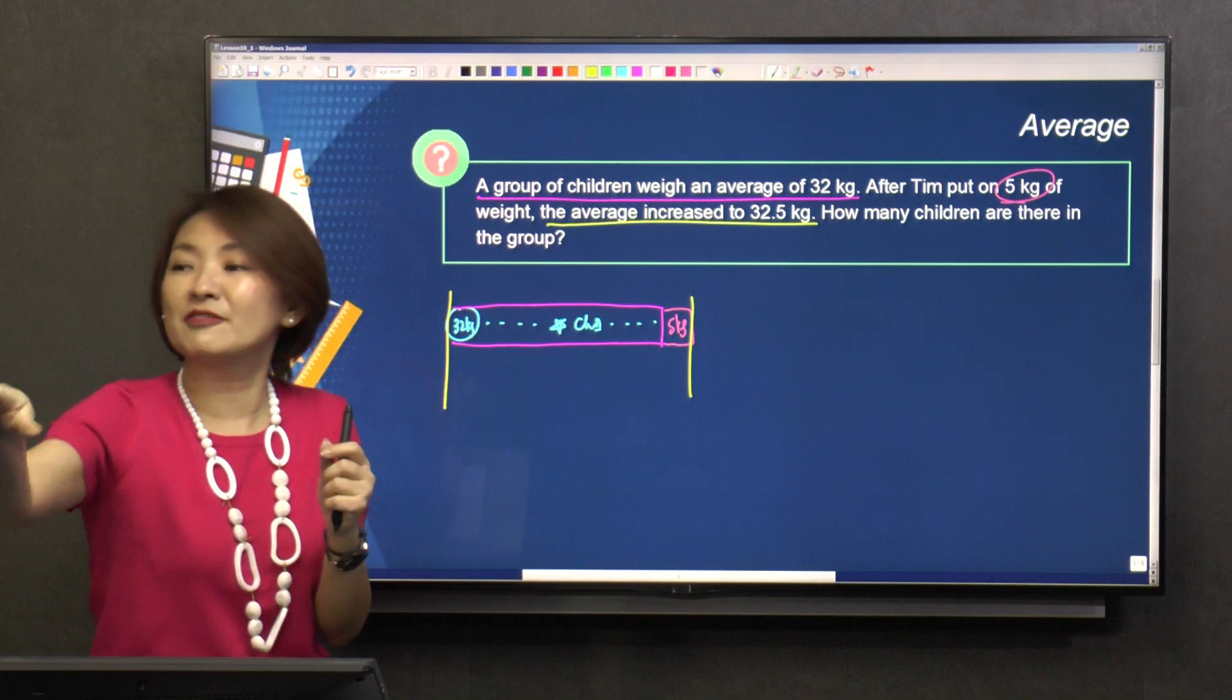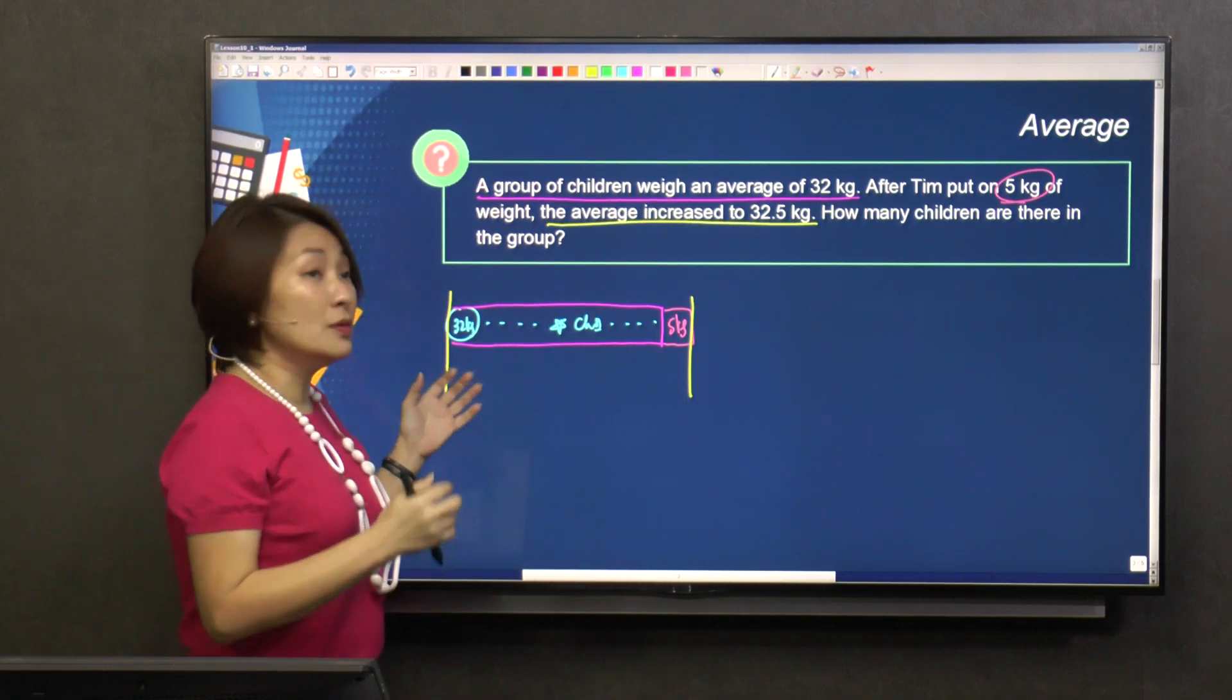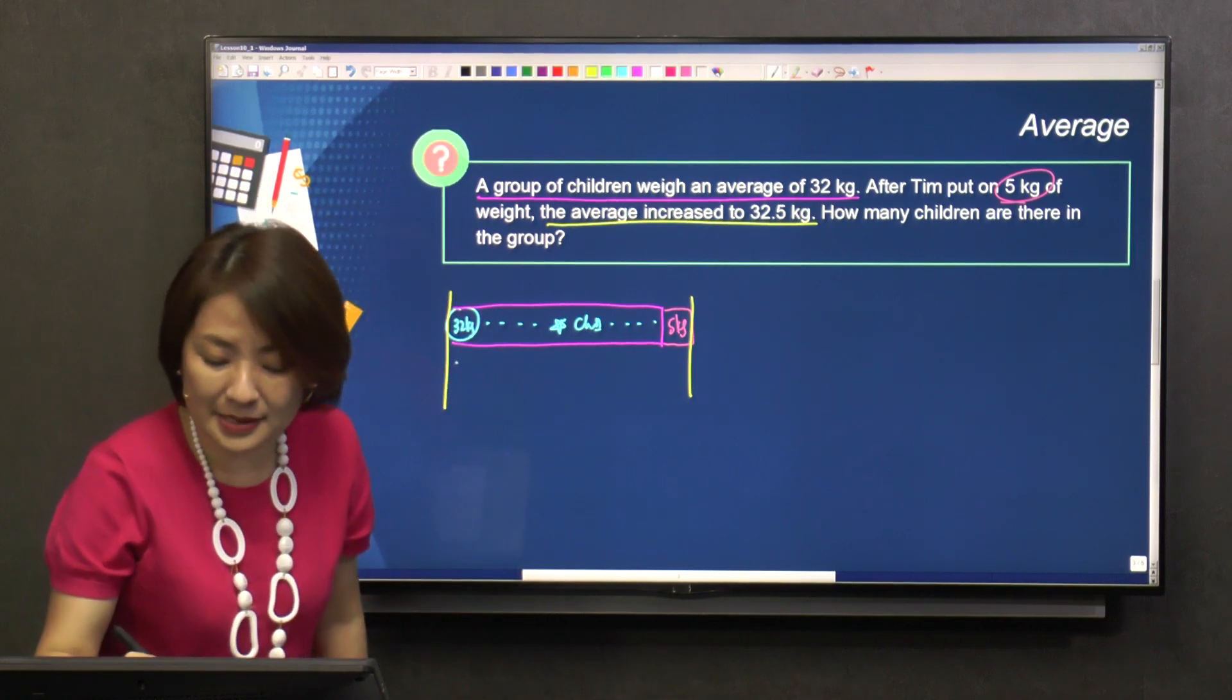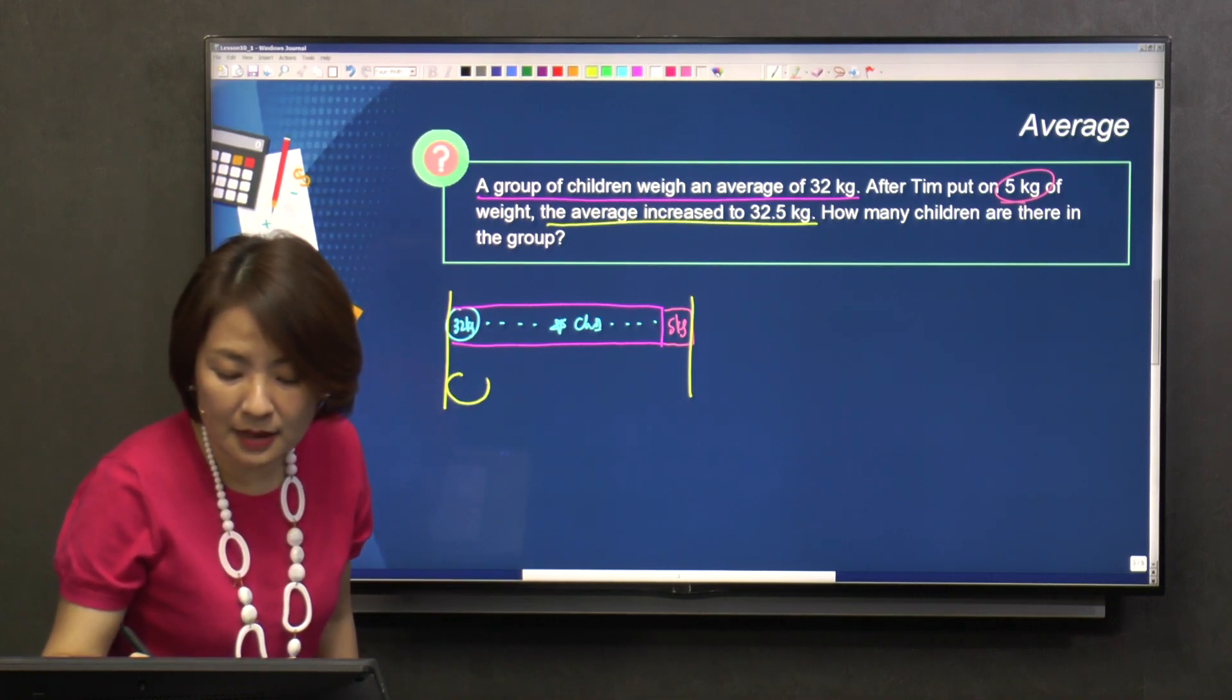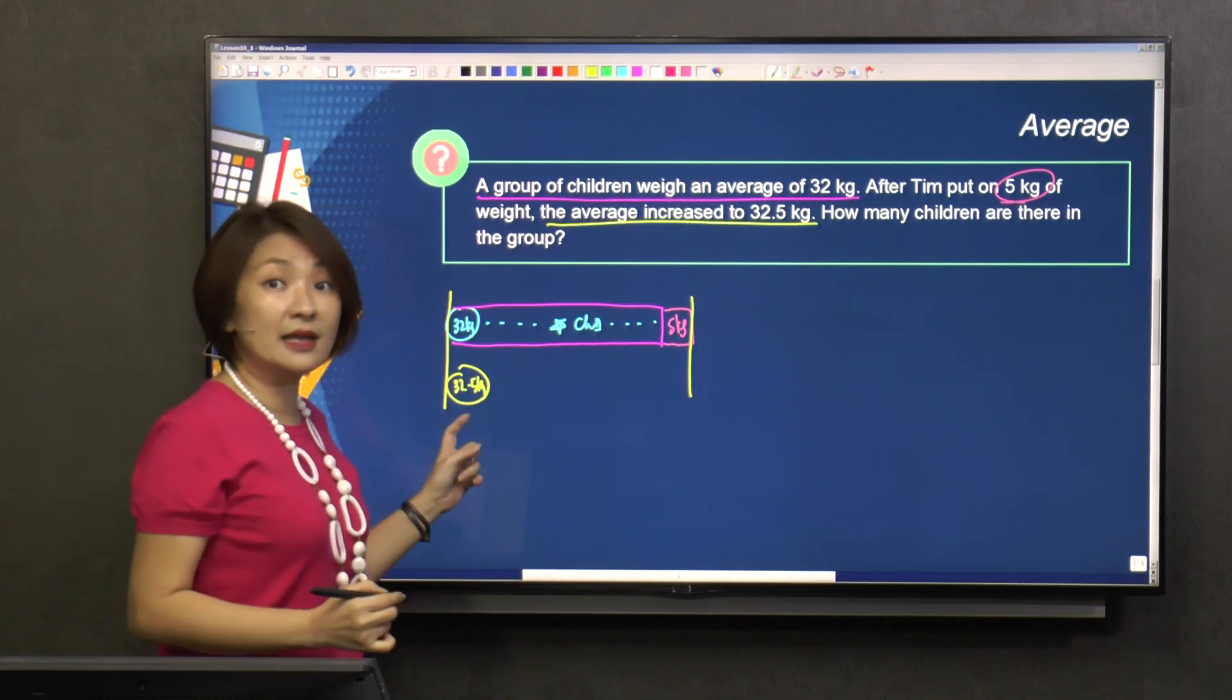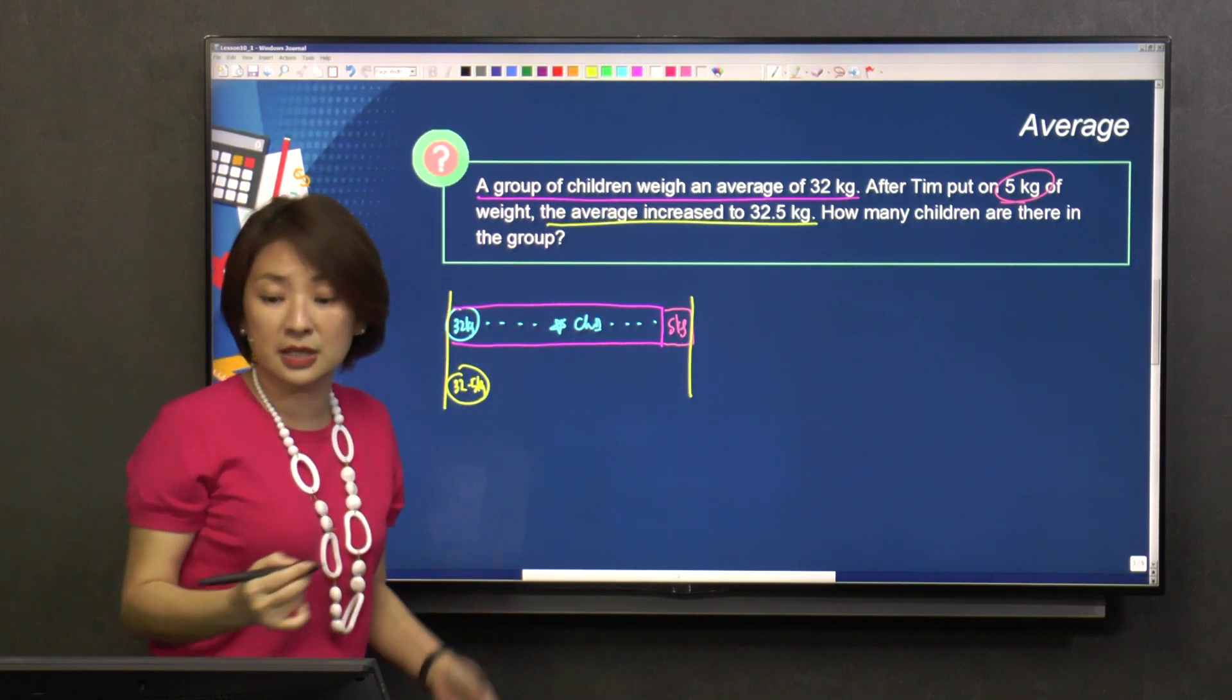Everybody, please take 0.5 kilograms, take 0.5 kilograms, 0.5 kilograms. It's like a weight distribution. Everybody increased by 0.5 kilograms, meaning everybody became 32.5 kilograms. Now how many children are there? Star, right? Did you add new children? You didn't.